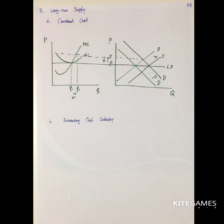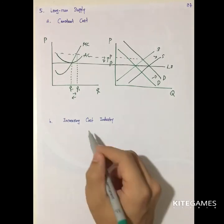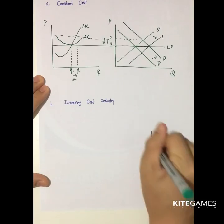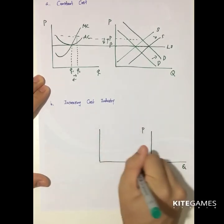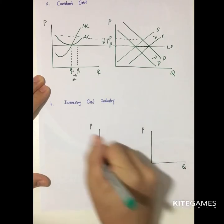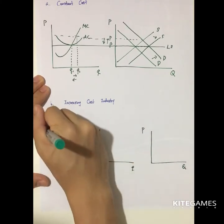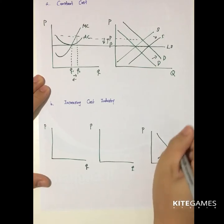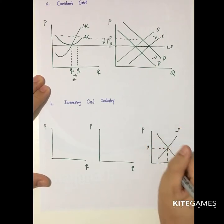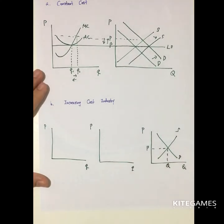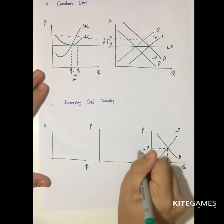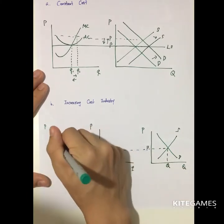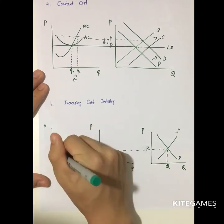There are not only one type of long-run supply curve. You also have the increasing cost industry. To show this case, you need to draw three diagrams. First, assume this is the original price and quantity — the original situation where the firm produces at the minimum average cost.